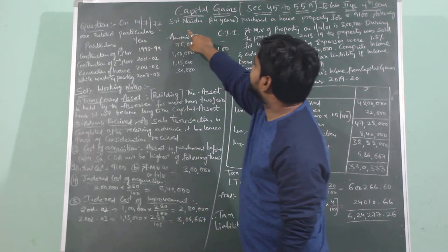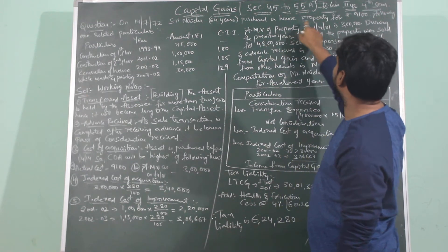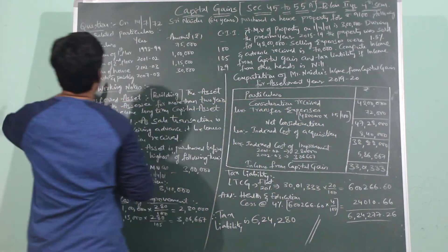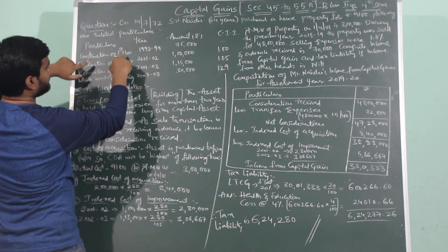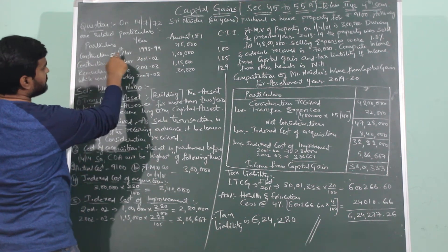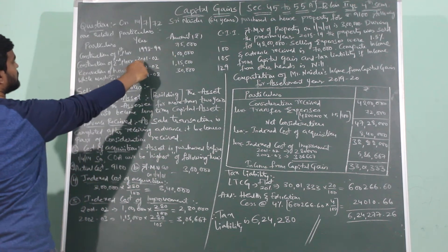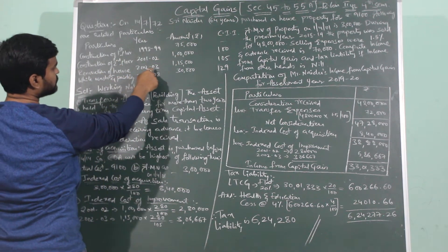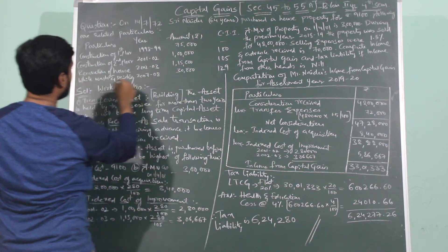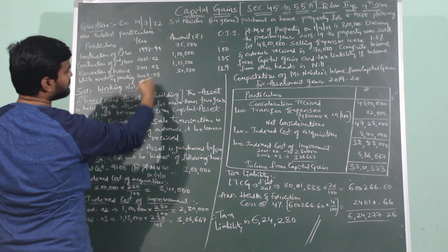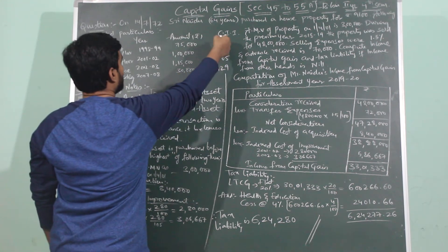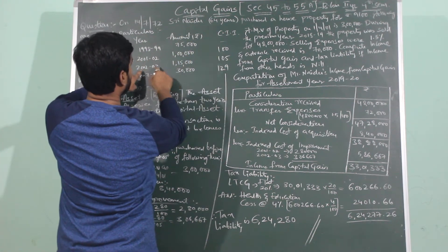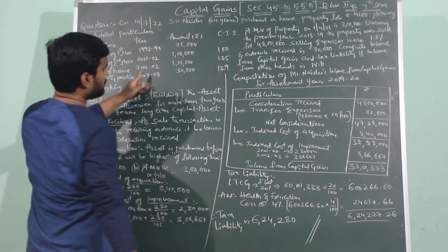On 14th July 1972, Shri Nayadu whose age is 64 years has purchased house property for Rs. 9,100. He incurred the following expenditure: In 1998-99, for construction of first floor Rs. 75,000; in 2001-2002, for construction of second floor Rs. 1 lakh; in 2002-2003, for renovation of the house Rs. 1 lakh 15,000; and in 2007-2008, for whitewash and painting Rs. 30,000. The cost inflation index: for 2001-2002 it is 100, for 2002-2003 it is 105, and for 2007-2008 it is 129.